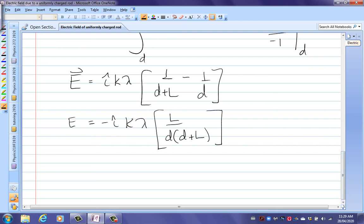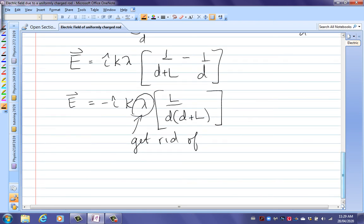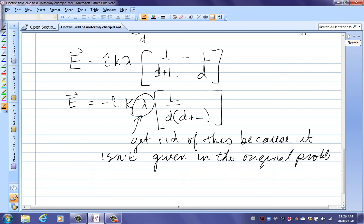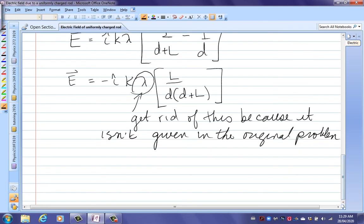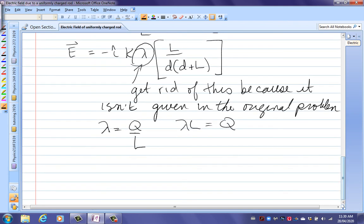We're getting close. But remember, if you look back at the original problem, you're given the total charge on the rod, and you're given the length of the rod, but you're not given lambda. You're not allowed to keep lambda in your answer because you weren't given that in the problem. You must get rid of this. And that will be a common mistake, that you'll forget to get rid of this. Get rid of this because it isn't given in the original problem. And you always have to check back for the variables that you're given in the original problem before you write your final answer. But we know that lambda is q over L. We're given q, we're given L. And so we see if we've got lambda L there. Lambda times L is just equal to q. So now I'm going to substitute that in for the final answer.